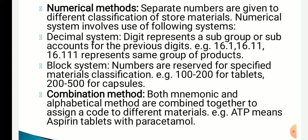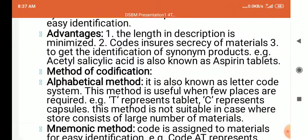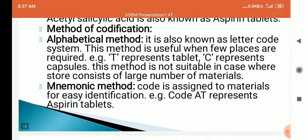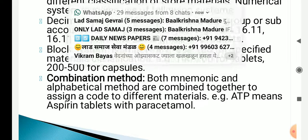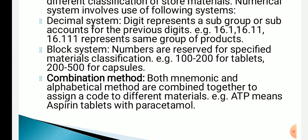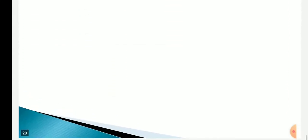The last method is combination method — both mnemonic code and alphabetical methods are combined together to assign a code to different materials. For example, 'ATP' means aspirin tablets with paracetamol. That is called as combination method.